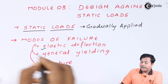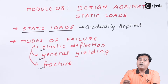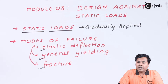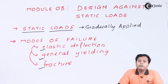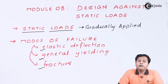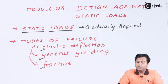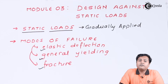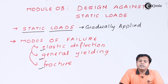The third type of failure is fracture. We are not considering fracture in detail right now — we will cover it in subsequent modules. Fracture actually means the sudden failure of the product due to cyclic loading. So these are the three main modes of failure which can be observed in machine parts.